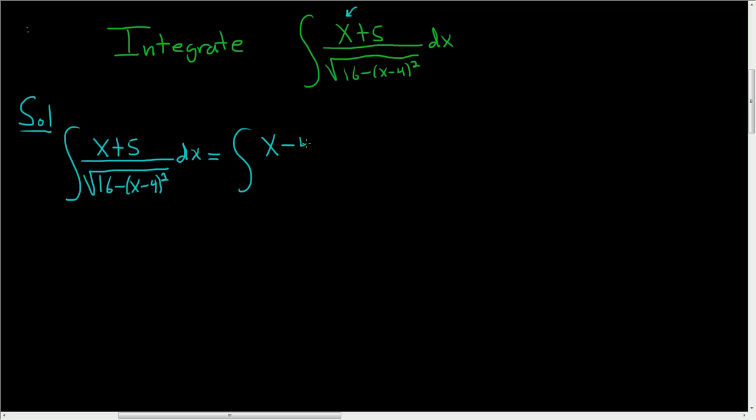So this is x minus 4 over the square root of 16 minus x minus 4 squared dx. And I'd say, well, you can't do that. That's wrong. Well, it actually is wrong. We have a minus 4 here, and we need to get to a 5. So we can fix that by adding 9. So here we have 9 over the square root of 16 minus x minus 4 squared dx.